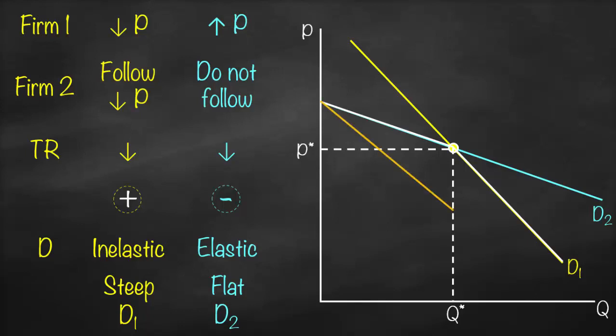We then draw marginal revenue curves: MR2 and MR1. You will discover that our marginal revenue is discontinuous at a certain price. It is discontinuous because our demand curve is kinked — broken at that point. This is our marginal cost. The profit-maximizing condition is marginal revenue equal to marginal cost. But because of the discontinuity in marginal revenue, if the marginal cost increases but remains within the discontinuous gap, we do not need to change our price or our quantity.